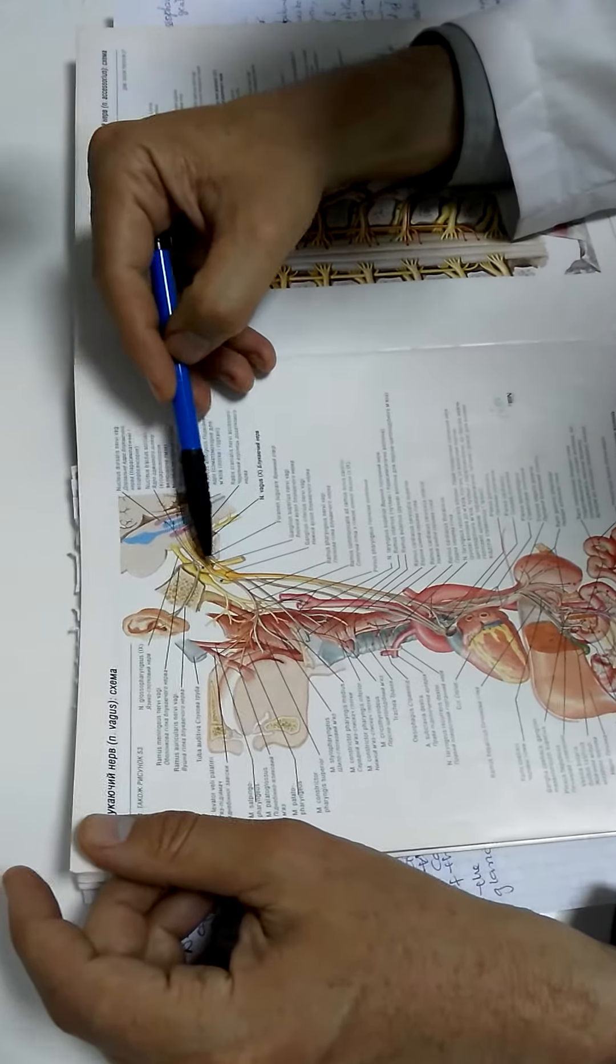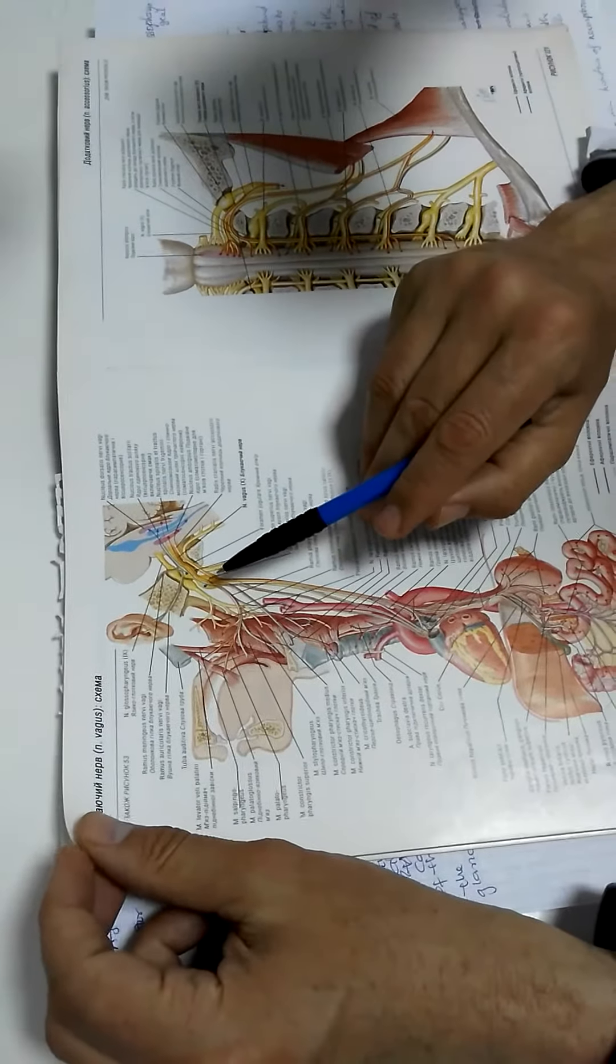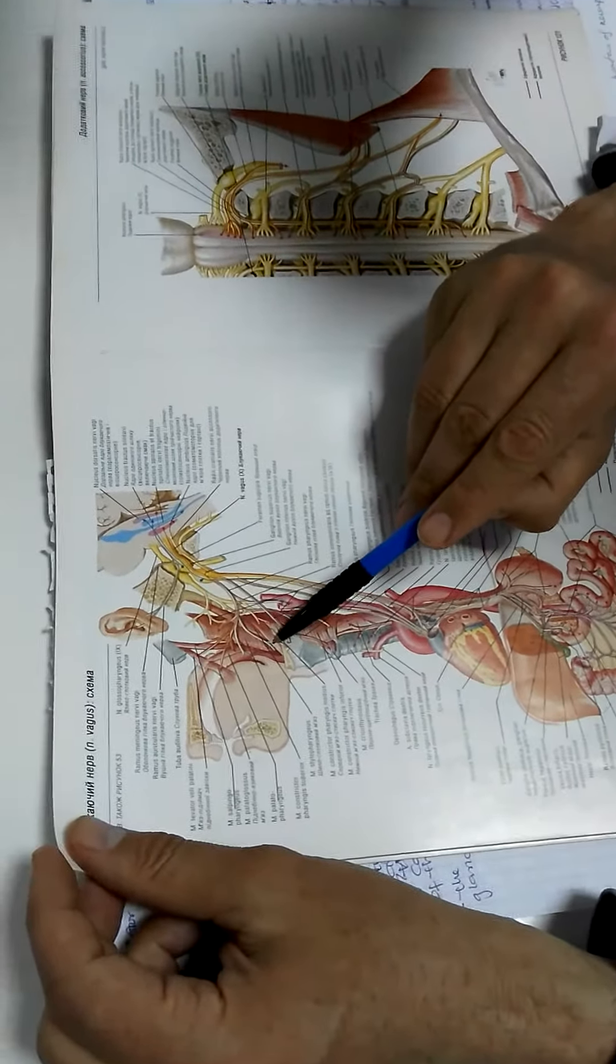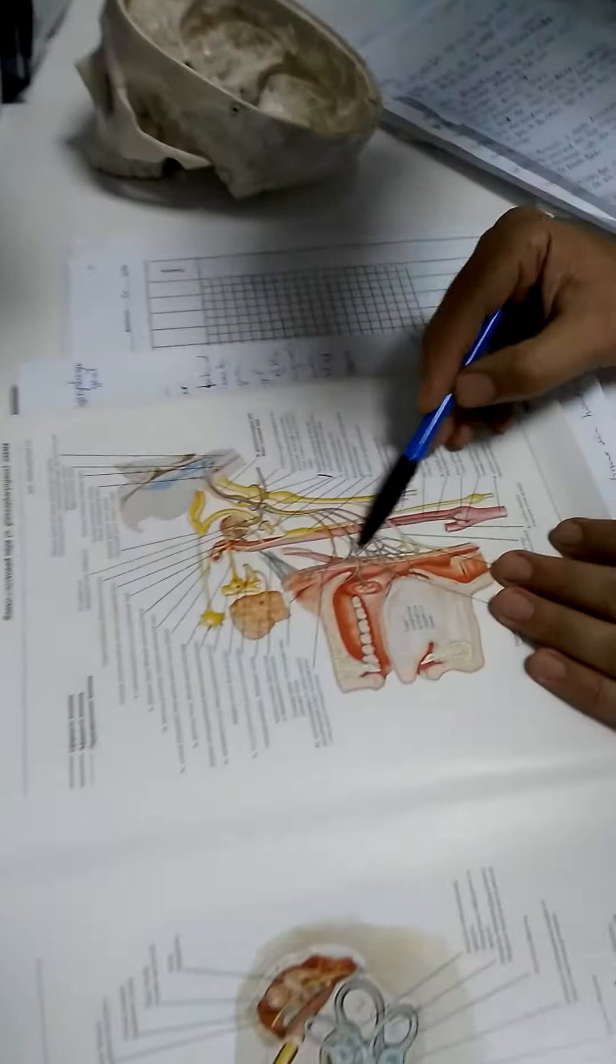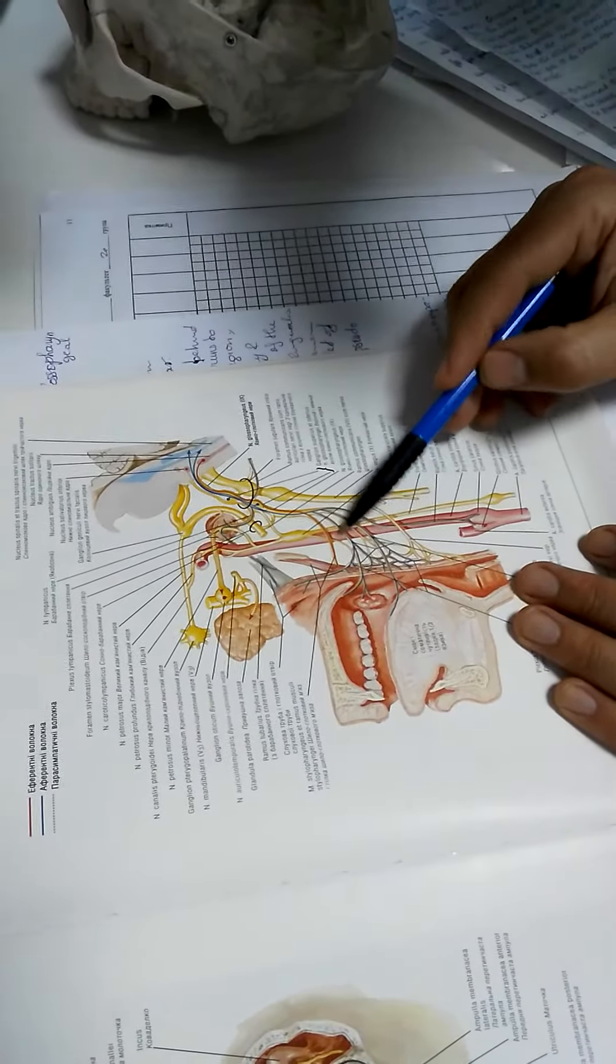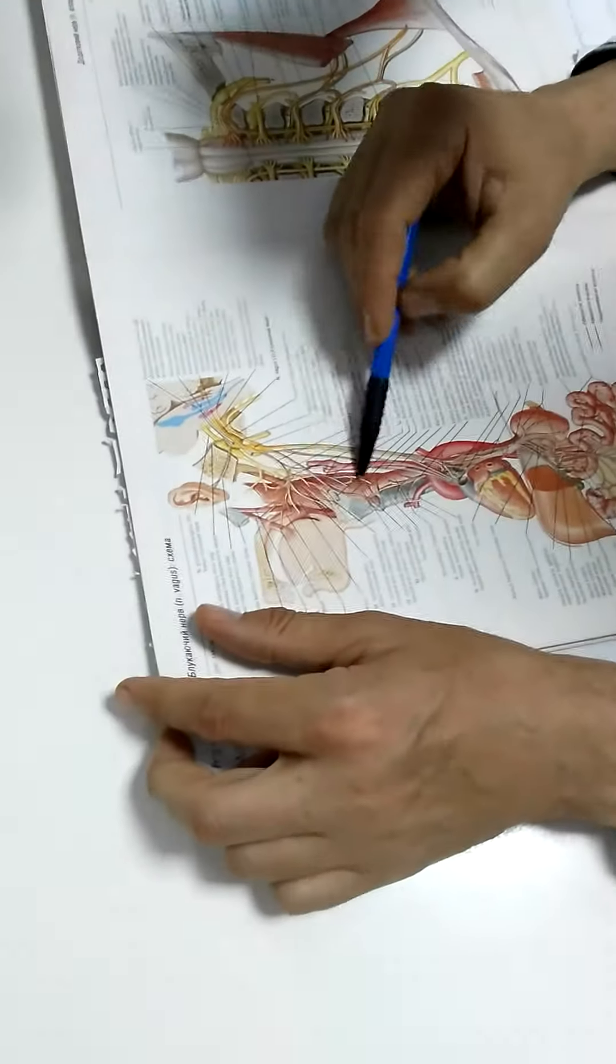Pars cervicalis next, most parasympathetic. In this place it gives motor and sensory branches to the pharynx. You know plexus pharyngeus and the nervus hypoglossus. The glossopharyngeus takes part in it, but glossopharyngeus gives whatever. So muscles of the pharynx.